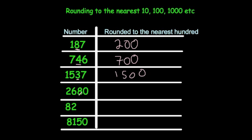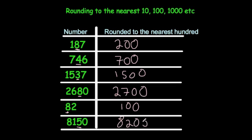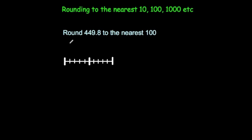For 2680, we look in the tens column and find an 8, so we round up to 2700. For 82, the number in the tens column is an 8, so we round up to 100. Finally, 8150: the tens column has a 5, so we round up to 8200.